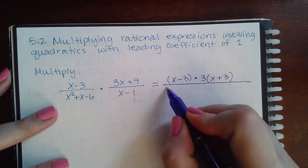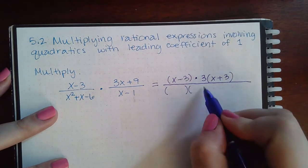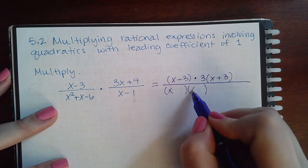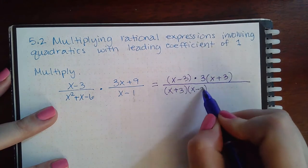And then this bottom, which I'm going to factor, is x plus 3 and x minus 2.